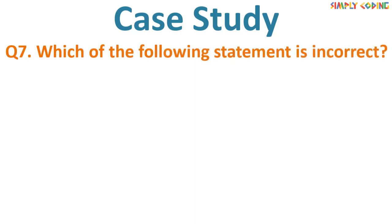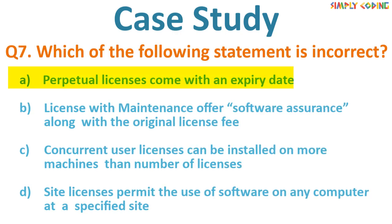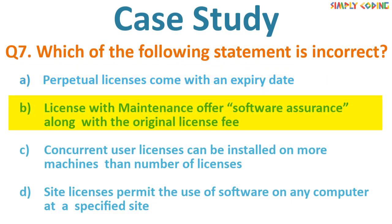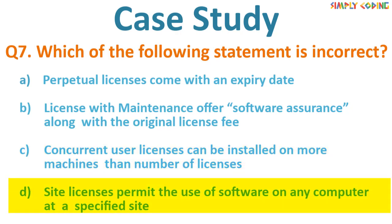Which of the following statements about a license is incorrect? A) Perpetual license comes with an expiry date. B) License with maintenance offers software assurance along with the original license fee. C) Concurrent user license can be installed on more machines than the number of licenses. D) Site license permits the use of software on any computer at a specific site. The correct answer is A — perpetual license does not come with an expiry date. All other statements are correct.